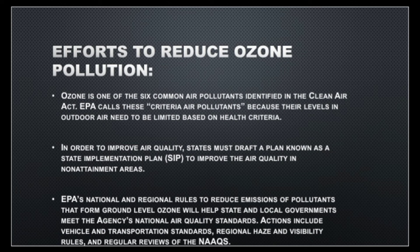EPA's national and regional rules to reduce emissions of pollutants that form ground-level ozone will help state and local governments meet the agency's national air quality standards. By controlling sources of NOx and VOCs — such as industries, automobile emissions, and burning — harmful products will be less produced. Actions include vehicle and transportation standards, regional visibility rules, and regular review to maintain the necessary balance.